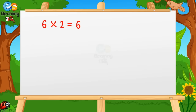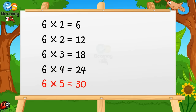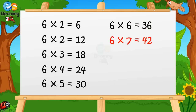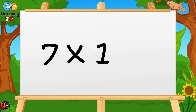6 ones are 6. 6 twos are 12. 6 threes are 18. 6 fours are 24. 6 fives are 30. 6 sixes are 36. 6 sevens are 42. 6 eights are 48. 6 nines are 54. 6 tens are 60.